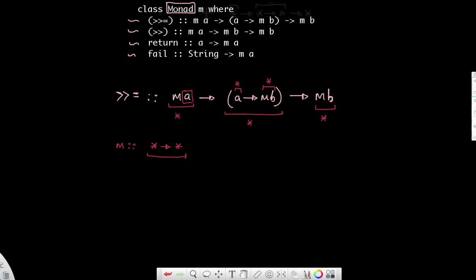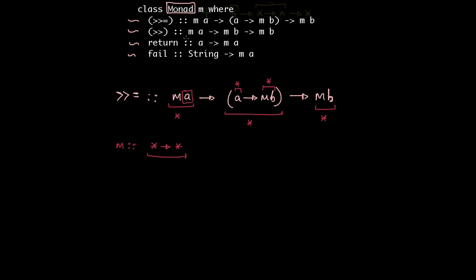Now why is this useful? This is useful because the very first thing - if I would like any type to be an instance of the Monads type class, I'm going to start off with something saying 'instance Monad'. And now the question is: I need to place something where M happens to be. I cannot put in something like an integer, or maybe an integer, or a list of integers, because the kind for a list of integers or int is basically a concrete type with kind star. What I really need is something that has a kind that goes from star to star.